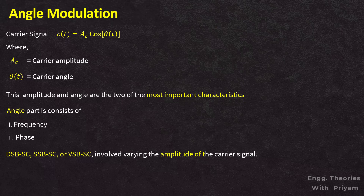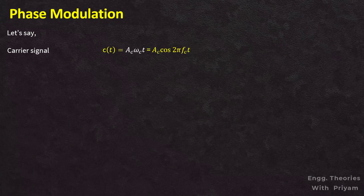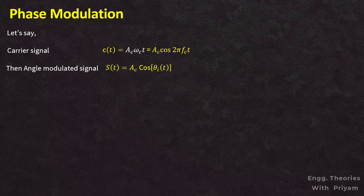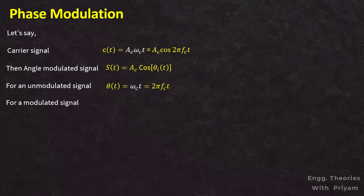For a carrier signal c(t) = Ac·cos(ωc·t) or Ac·cos(2πfc·t), the angle modulated signal s(t) = Ac·cos(θi(t)), where θi(t) is the instantaneous angle of the modulated signal. For an unmodulated signal, θi(t) = ωc·t = 2πfc·t. For the modulated signal, θi(t) = 2πfc·t + φ(t), where φ(t) is the change in phase from the unmodulated value.